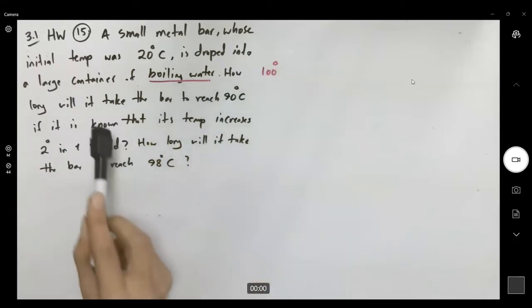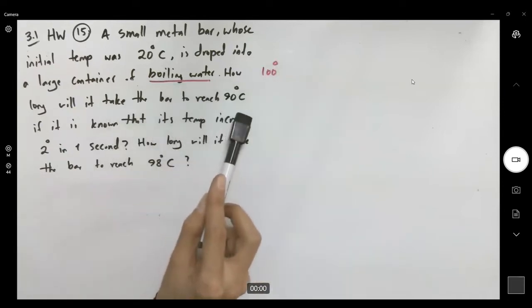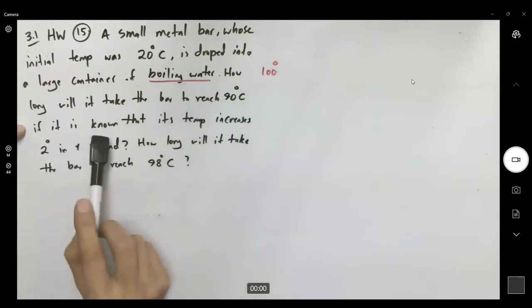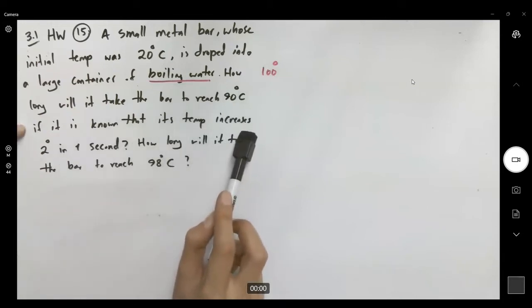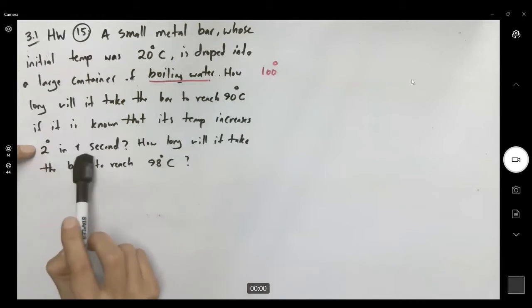How long will it take the bar to reach 90 degrees centigrade if it's known that its temperature increases 2 degrees in one second? Then the question says how long will it take the bar to reach 98 degrees centigrade?